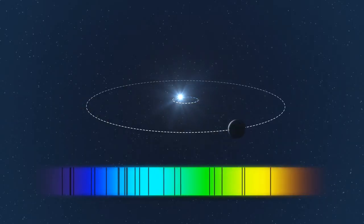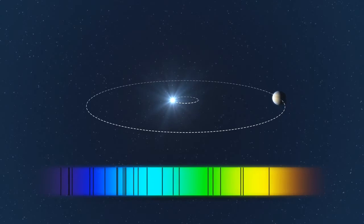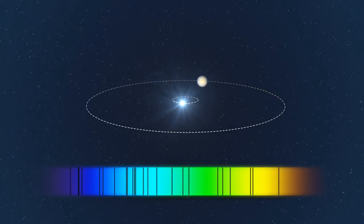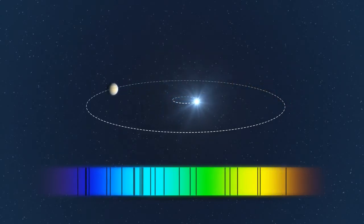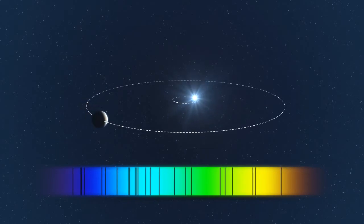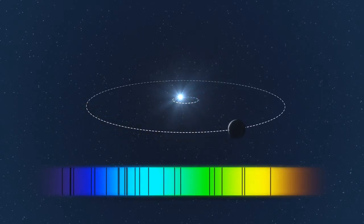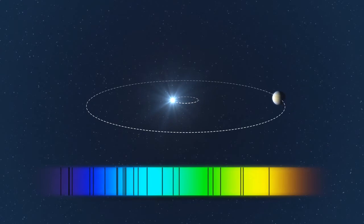A planet in orbit causes its star to regularly move backwards and forwards as seen from Earth. This creates a tiny shift of the star's spectrum that can be measured with an extremely sensitive spectrograph such as HARPS.